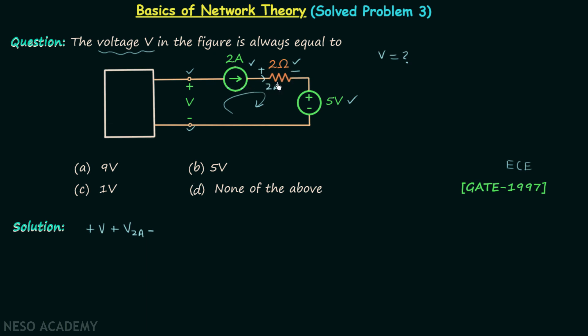So we have 2 multiplied to 2, and then we have minus 5 equal to 0. So this is our equation, and we can further write it as V plus V sub 2A minus 4 minus 5 equal to 0.